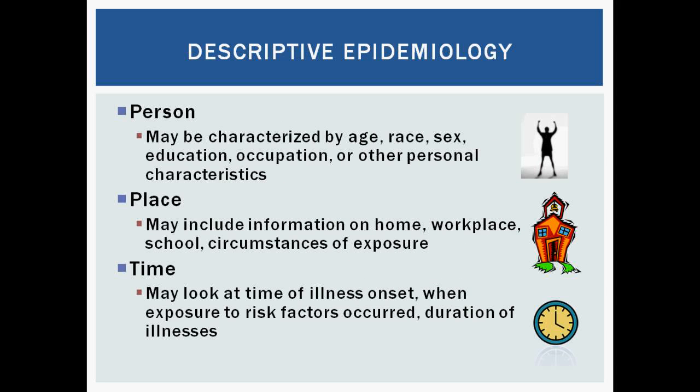Descriptive epidemiology is the focus of the last two webinars, and we're going to focus on that again today. Descriptive epi looks at person, place, and time. When you look at person, it could be characterized by age, race, sex, education, and all those different types of things. For place, it could be where people live, where they go to school, where they work, or different events they may have attended. And then time — when is it happening, what season, and how long are people sick? All those things are really key when we look at investigations.